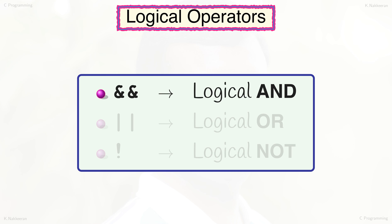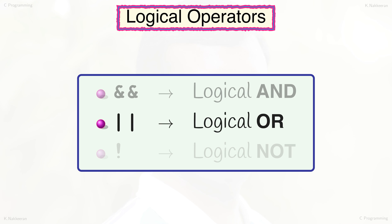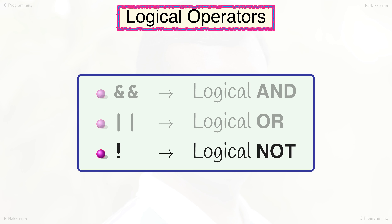C programming language has three logical operators: double ampersand (&&) for the AND logical operator, double pipe (||) for the OR logical operator, and exclamation mark (!) for the NOT logical operator. This is why the not-equal-to relational operator is written as !=.